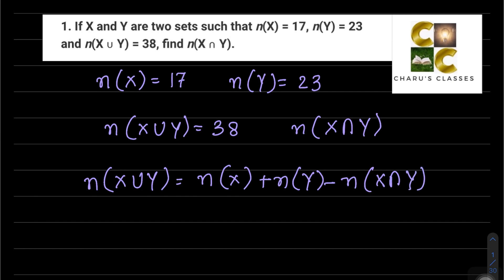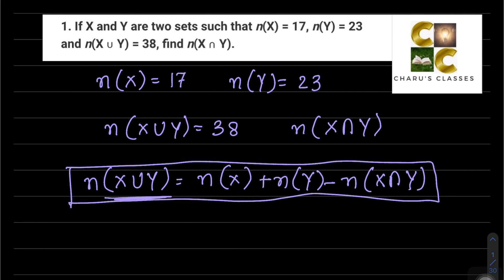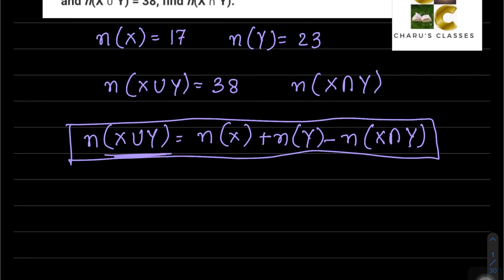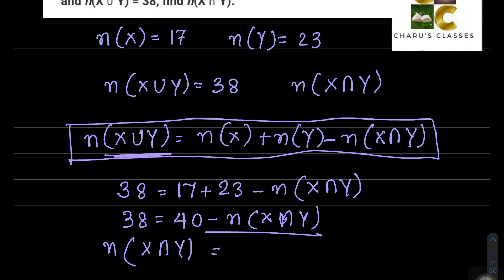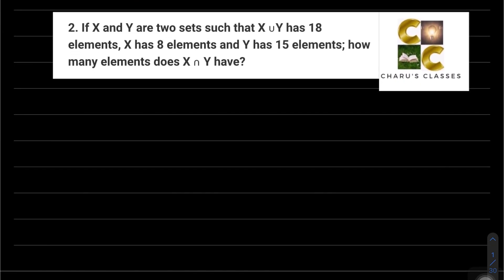The total number of elements in X∪Y equals the number of elements in X plus the number of elements in Y minus the number of elements common in X and Y. Using this: n(X∪Y) is 38, n(X) is 17, n(Y) is 23. So 38 = 40 - n(X∩Y). Taking this to the other side, n(X∩Y) = 40 - 38 = 2.